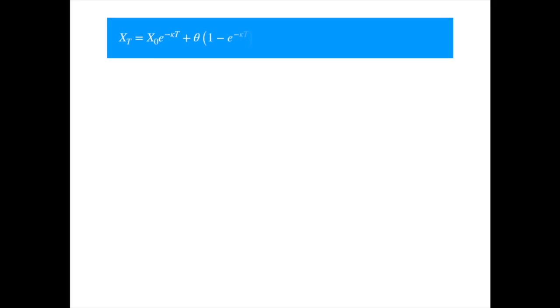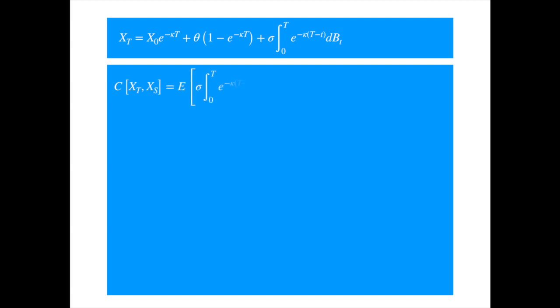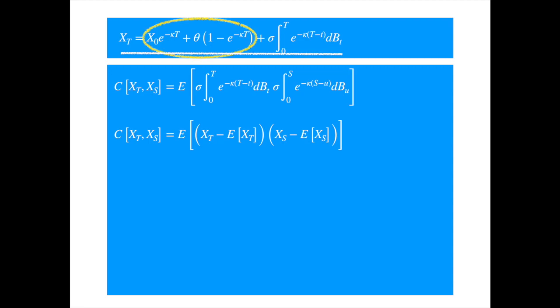Rearranging, and noting that the exponential of zero is one, we get the variance formula: Var(X_t) = (sigma^2)/(2*kappa) * (1 - e^(-2*kappa*t)). We now derive the covariance formula. Recall that the covariance of a stochastic process represents the covariance between the value of the process at time t and another time s. We can write the covariance as C[X_t, X_s] = E[(X_t - E[X_t])(X_s - E[X_s])]. Subtracting mean from x leaves only the stochastic component.